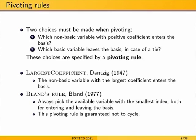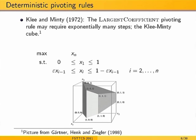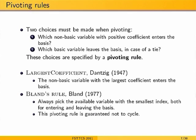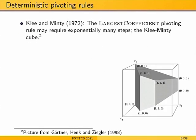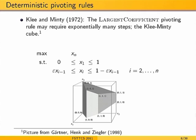In 1972, Klee and Minty showed that even ignoring cycling, Dantzig's rule can lead to an exponential number of steps. Consider maximizing X_N over a set of linear constraints that defines an almost-cube polytope. For a tiny epsilon it resembles a cube, and one can show the largest-coefficient rule follows a Hamiltonian path through all 2^n vertices of this cube.